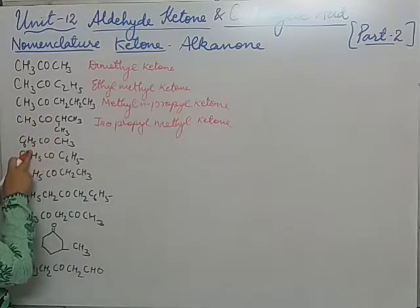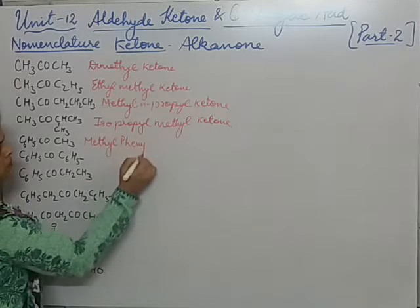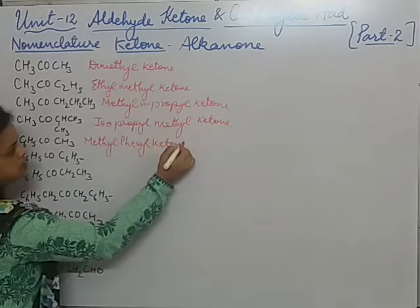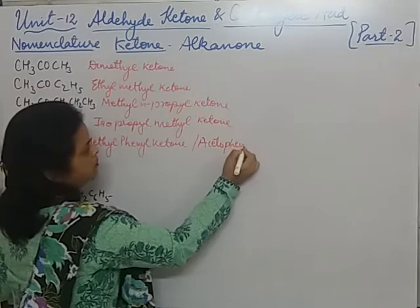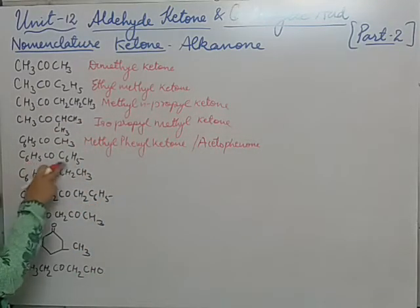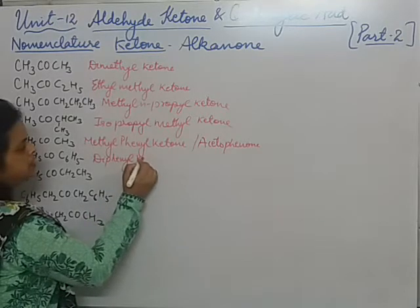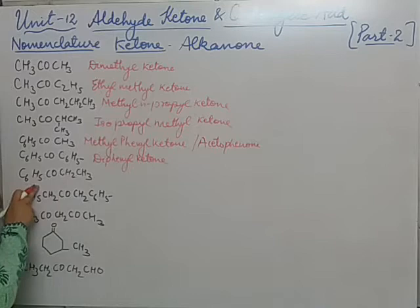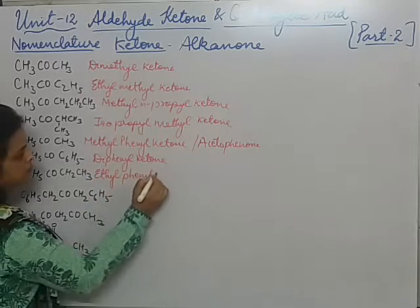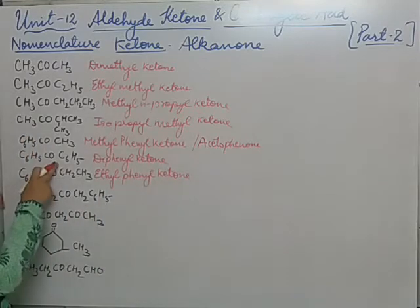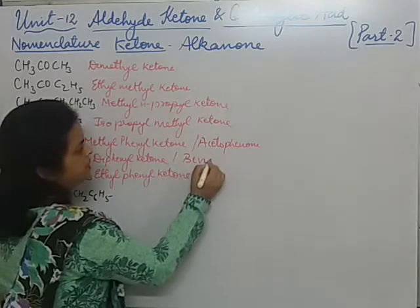Now here we are having one phenyl group and one methyl group, so we will write methyl phenyl ketone. Students, this is more commonly known by the name acetophenone. This compound has two phenyl groups, so we will write diphenyl ketone. This is also called benzophenone. Here we are having a phenyl group and an ethyl group, so we will write ethyl phenyl ketone.